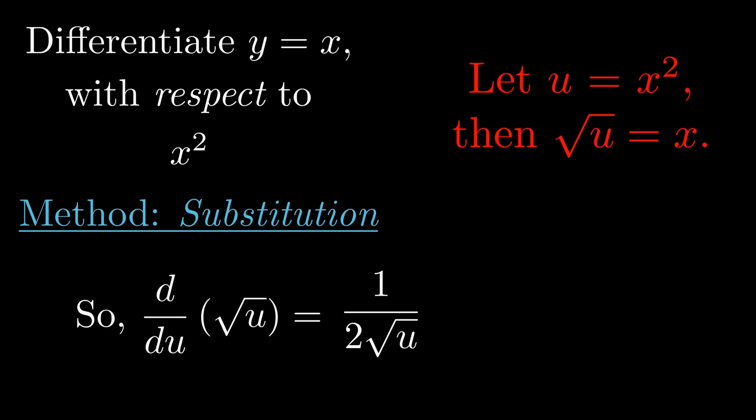Notice that what we have on the left-hand side here is equivalent to the derivative of y with respect to x squared, which is equal to the derivative of x with respect to x squared, which equals 1 divided by 2x. And that's the final answer to this problem.